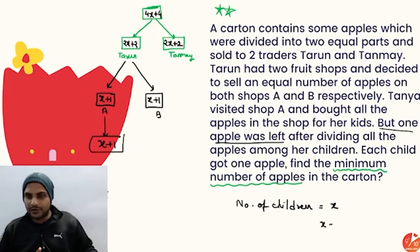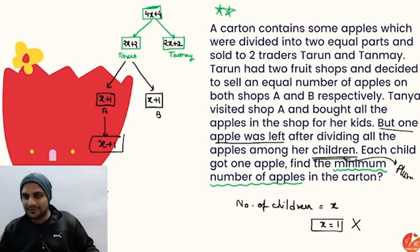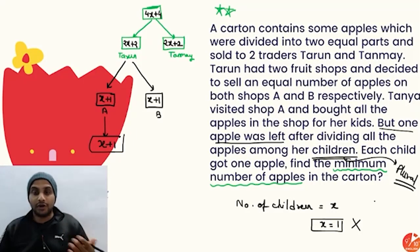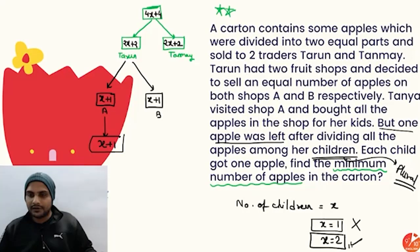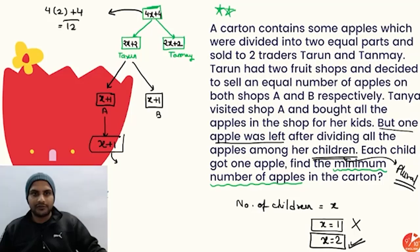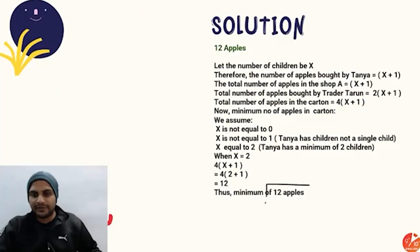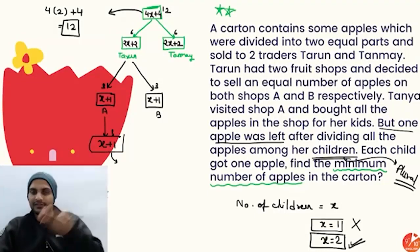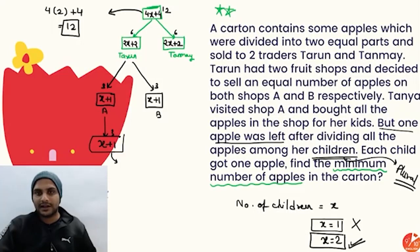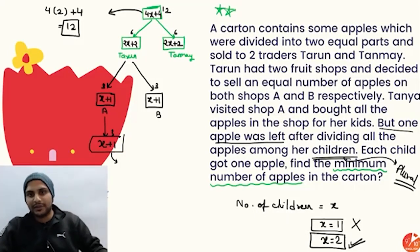The word 'children' is plural, so x must be at least 2. Substituting x = 2: total apples = 4(2) + 4 = 12. So six apples went to each trader; three to each shop; two went to the children and one was left over. The minimum number of apples in the carton is 12.